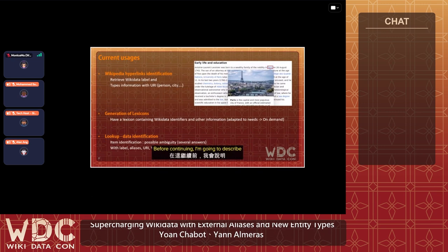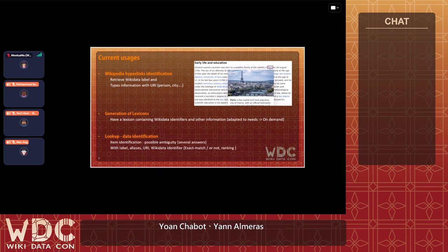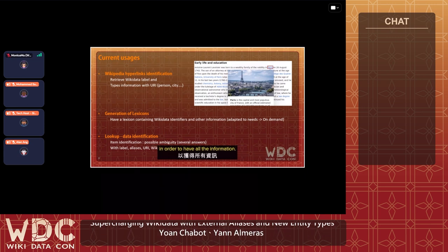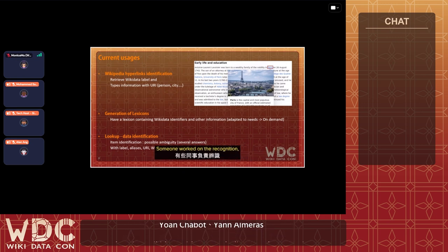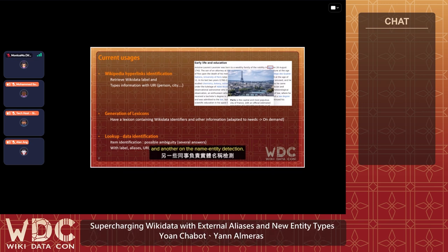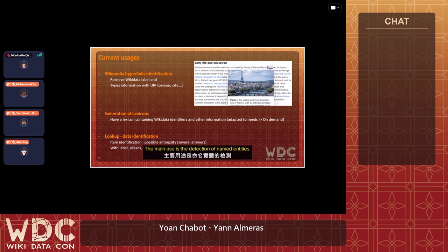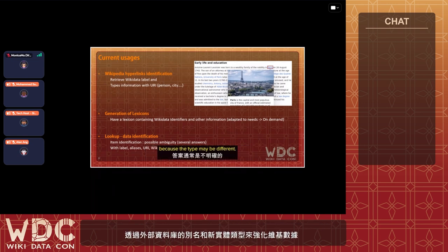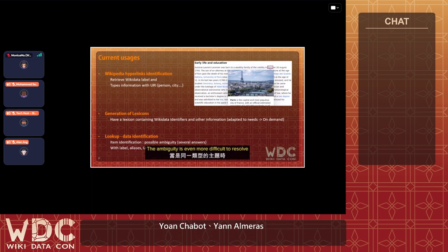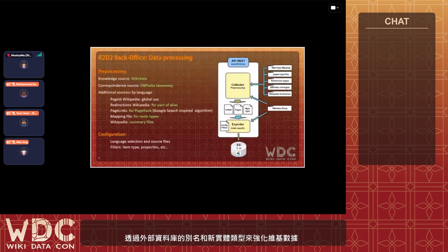Before continuing, I'll describe the first use of the R2D2 database. The first objective was to retrieve information from Wikidata hyperlinks, including redirect links. Colleagues asked me to generate specific lexicons — some working on recognition, others on named entity detection. This project has also been used to identify items for several projects. Entity detection is often ambiguous because the type may differ, and ambiguity is harder to resolve when items share the same type — for example, several cities share the label 'Paris.'